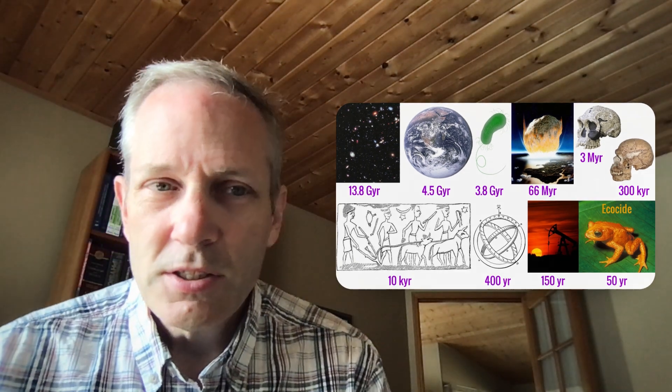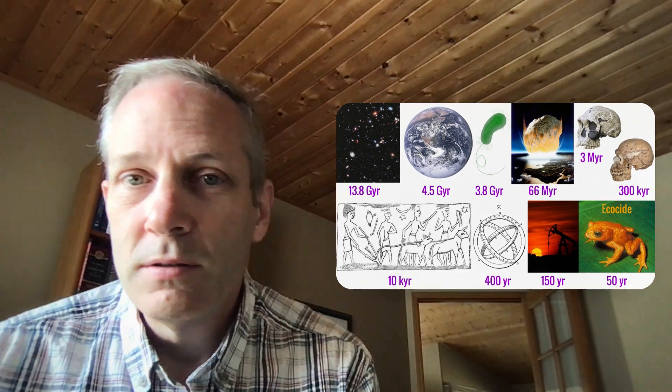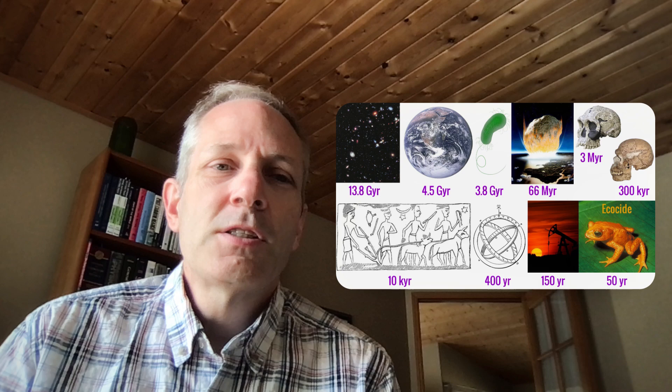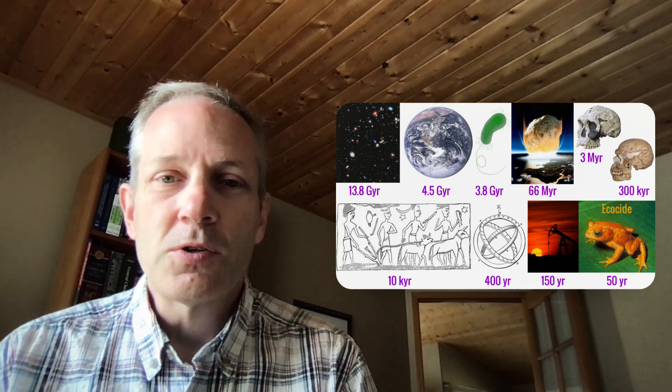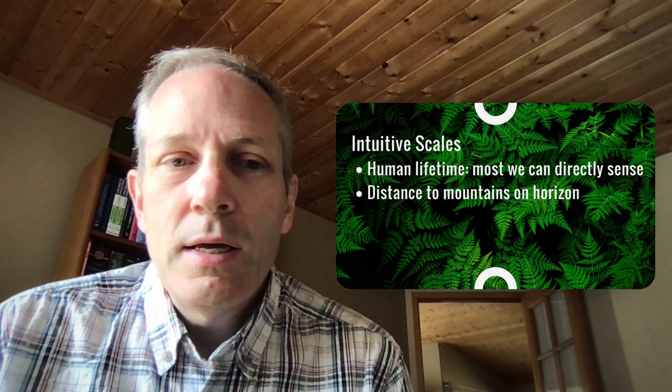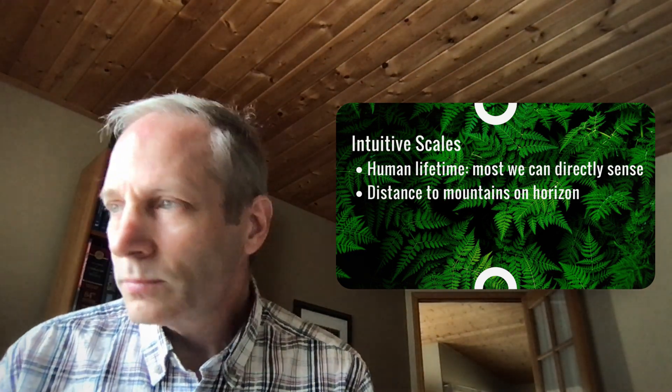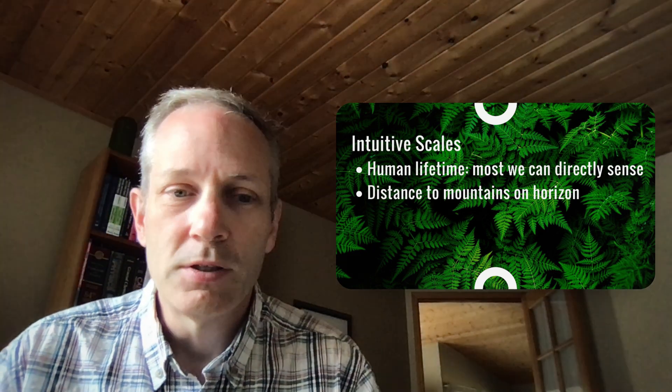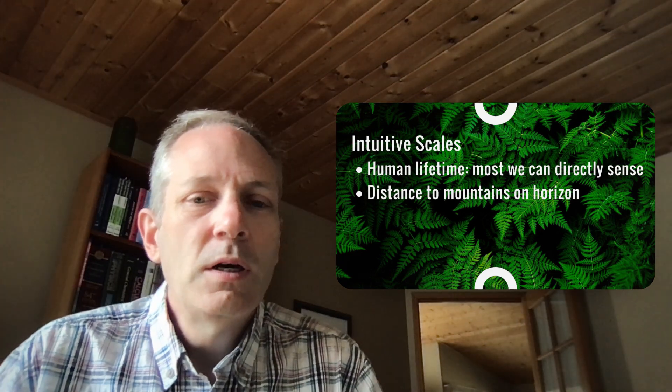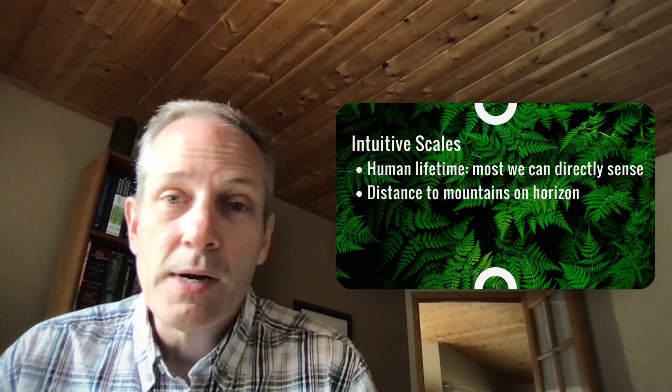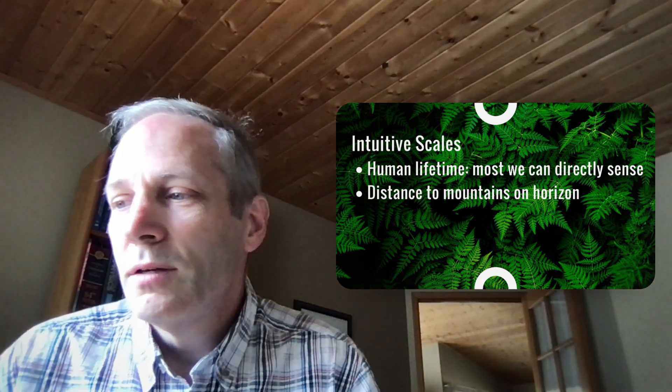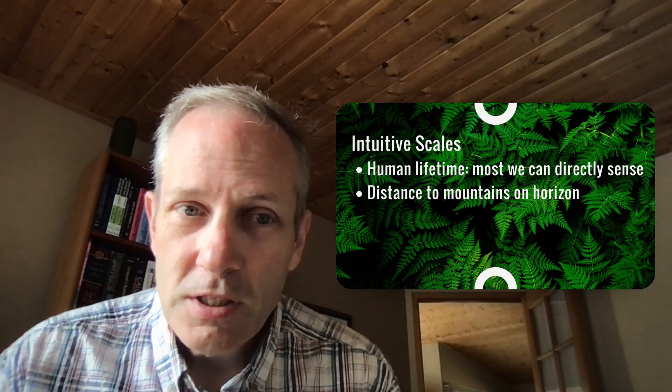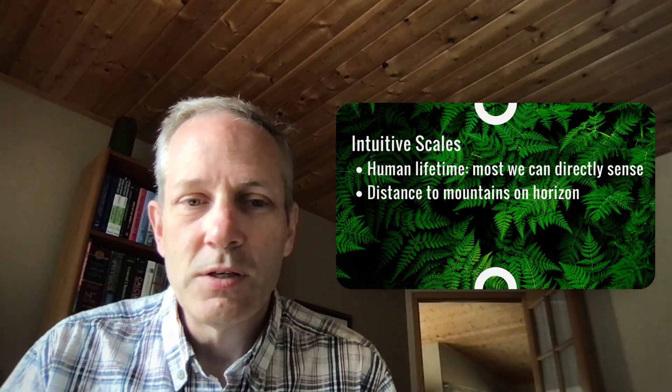So, I'm using the term ecocide here as just a shorthand for our ecological nosedive that we looked at in the last episode, that looks like the start of a sixth mass extinction. It's a strong term, but not obviously wrong. We need to compare these things to timescales that we can really imagine, because the numbers are just kind of large and hard to get our heads around. So I picked two: one is the human lifetime that most of us can directly sense and have direct experience with, and the other is distance to some mountainous horizon. These aren't the only two choices, but let's just see where these go.